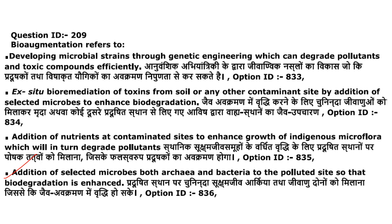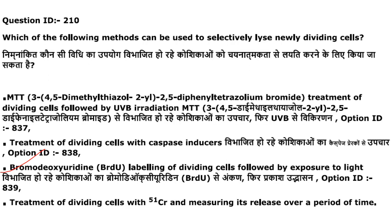Which method can be used to selectively lyse newly dividing cells? It is bromo-deoxyuridine labeling of dividing cells followed by exposure to light. Answer is option 3.